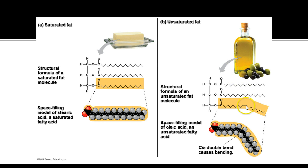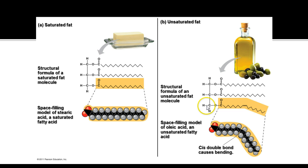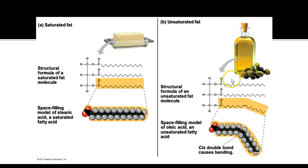Unsaturated fats have at least one fatty acid with one or more double bonds. The cis double bond causes a kink or bend in the carbon chain. Because of this, when you pack these molecules together they take up more space and can't be packed as tightly as saturated ones, so they form a liquid at room temperature. Butter is a saturated fat, while olive oil is unsaturated.